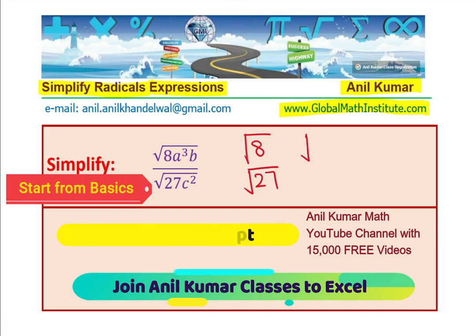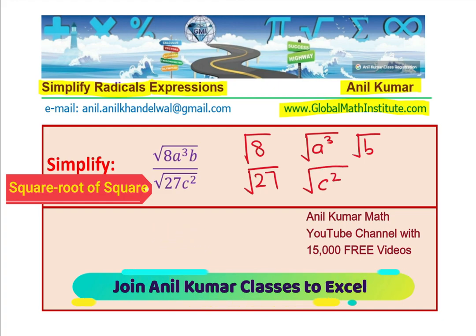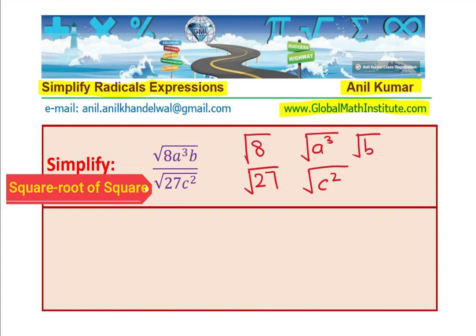What is square root of a³, what is square root of b, and what is square root of c²? Once you know that, you can easily write down a simplified form.